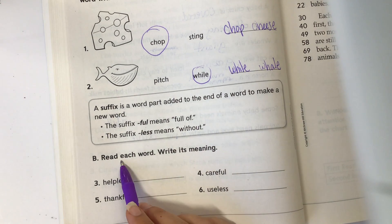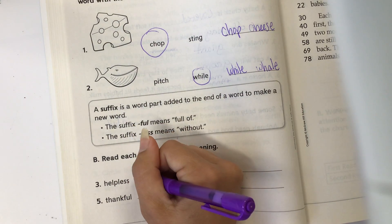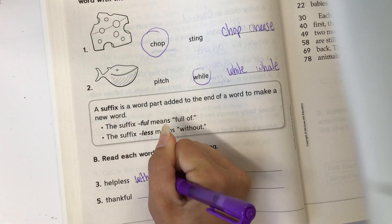So let's see here. Read each word and write its meaning. Helpless. Less means without, so we're going to say without help.